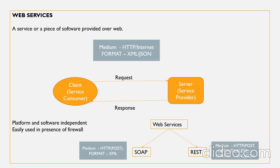Now that we know web services are services available over the web, there should be someone providing those services. They are called service providers. The service provider or server is the entity that develops or implements the application and makes it available over the internet. Since we have the provider, we also need someone to consume it — that is called the service consumer or client. The client sends a request to the server, the server processes that request and sends the response back to the client. This is how the communication takes place.